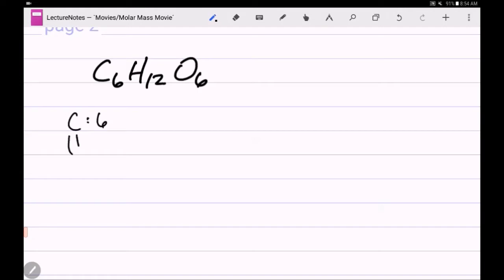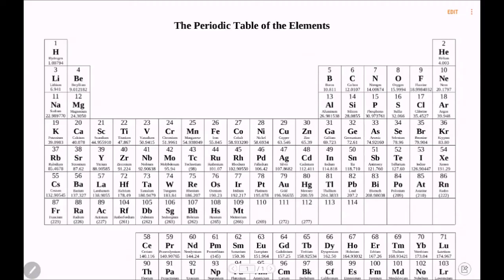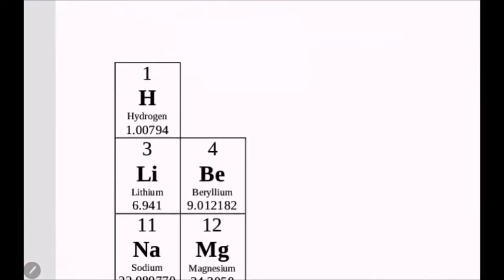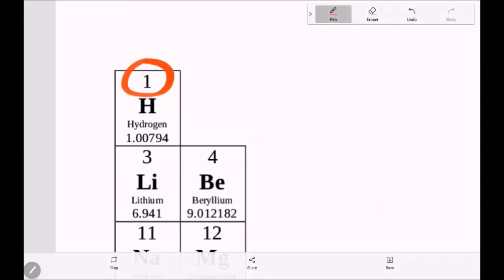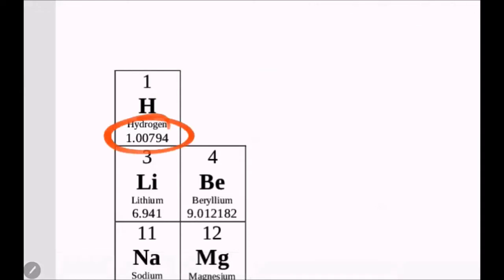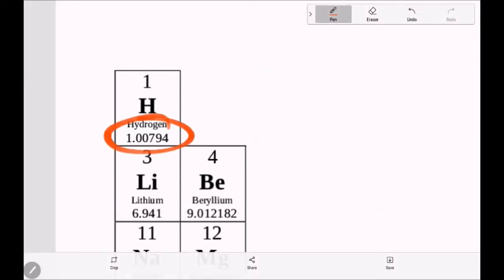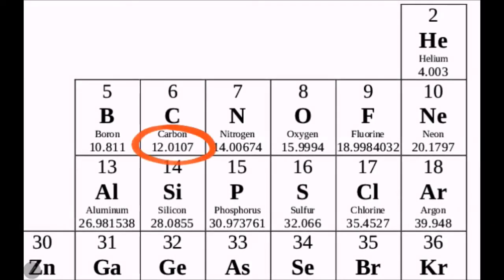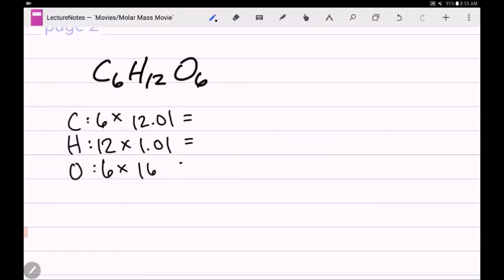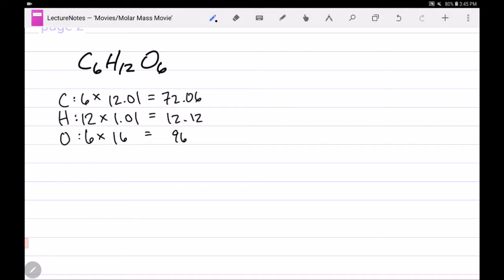There are six carbons, there are 12 hydrogens, and there are six oxygens. Now we want to go look for their molar masses on the periodic table. Remember that molar mass is the decimal number. This number is the atomic number. That's just the number of protons. That's not the number we want. We want the average atomic weight. So for hydrogen, 1.01. For carbon, 12.01. And for oxygen, 16. So all of that adds up to be 180.18. And then it needs to be stamped with units. And then it's always one mole on the bottom.